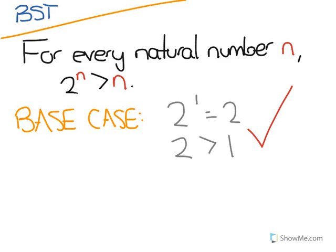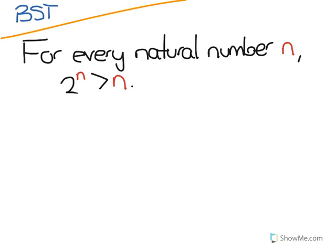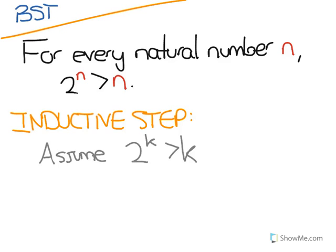Next, we move on to our inductive step, and we assume the statement is true for all k, all natural numbers up through an arbitrary k. And this is our inductive hypothesis that we'll use later on in the proof.